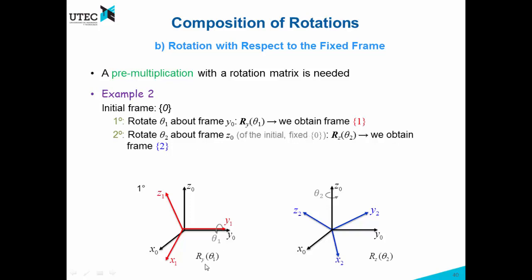Now we have Ry, which was the first rotation, and then the second rotation Rz — but this Rz is with respect to the fixed frame, so it will pre-multiply the first rotation. So we will have Rz pre-multiplying Ry. Comparing with the previous example, in the previous case it was post-multiplication and now it is pre-multiplication.